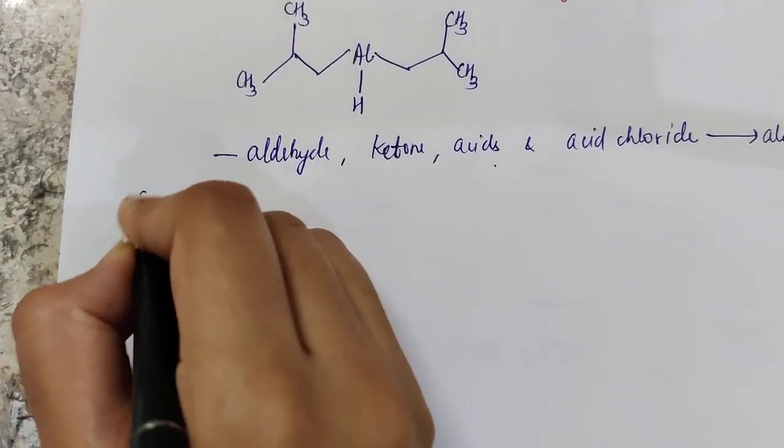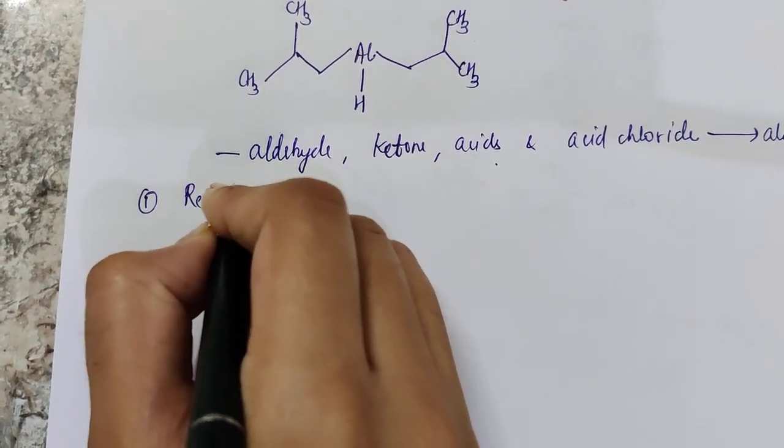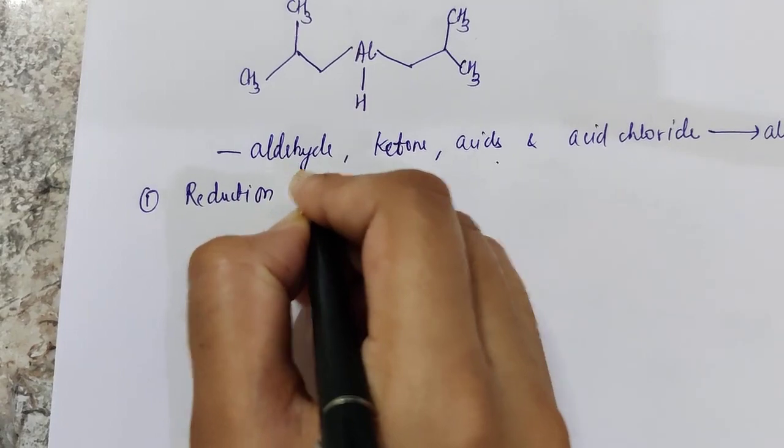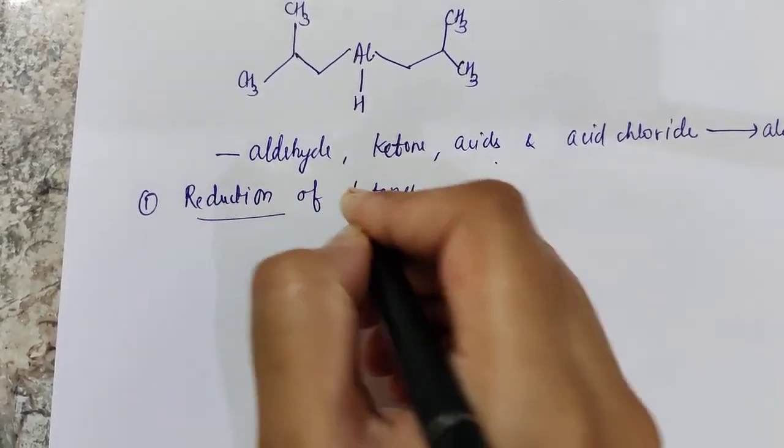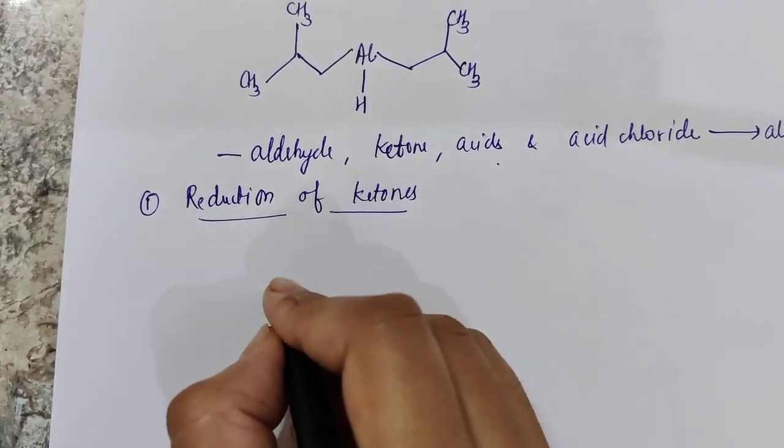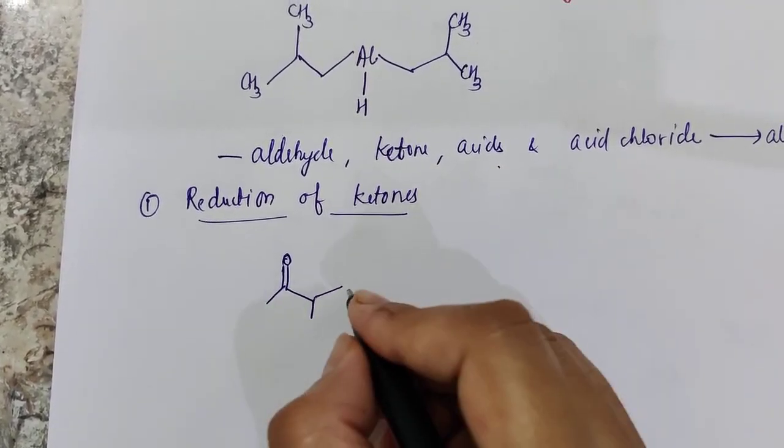So first if we talk about reduction of ketones, ketones are converted to alcohol. Let's take an example of ketone. This is ketone.